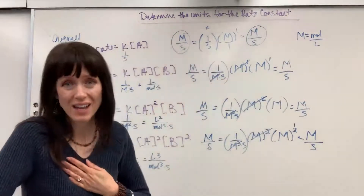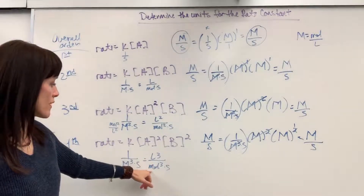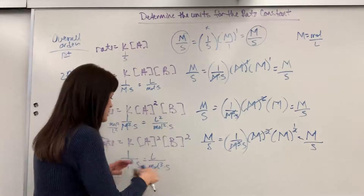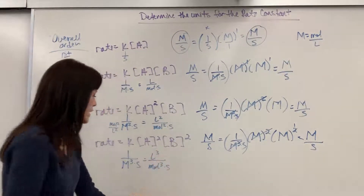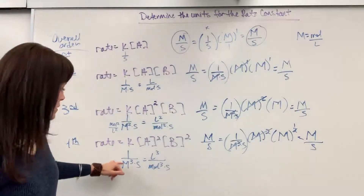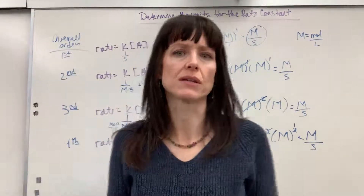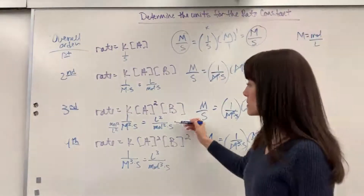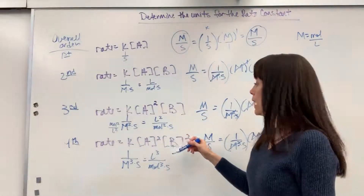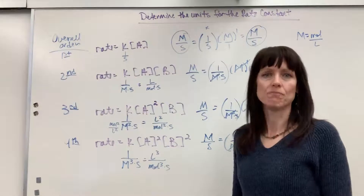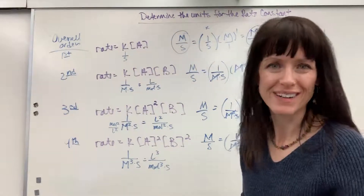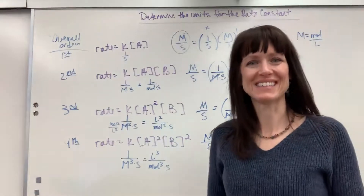When you see units written with liters and moles, don't let it throw you. If you see liter cubed divided by mole cubed times second, just rewrite it as 1 over molarity cubed times second — it's cleaner. AP and IB exams write it that way, but it's the same thing. Good work — you're doing awesome. Have a happy day!